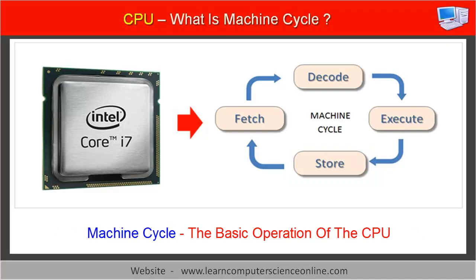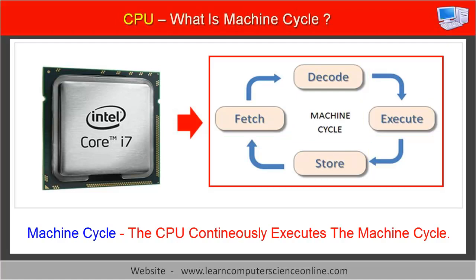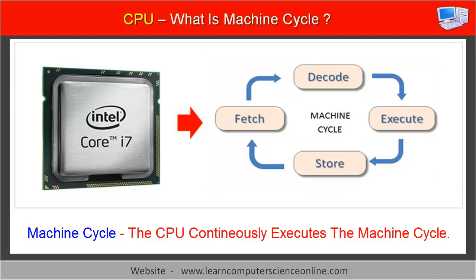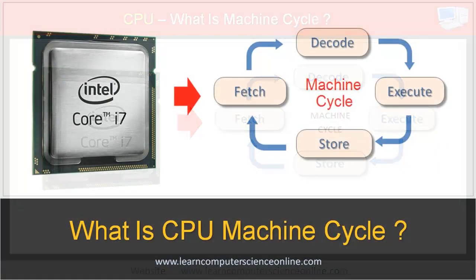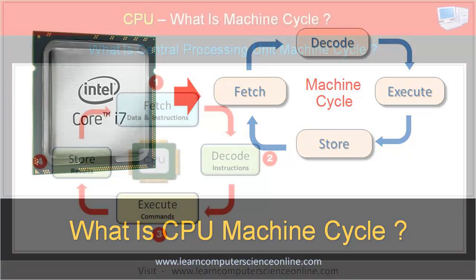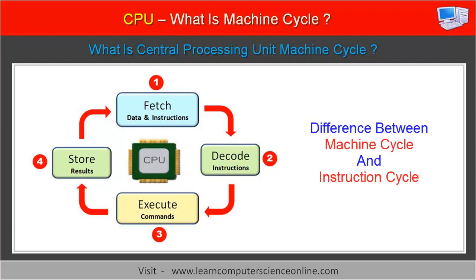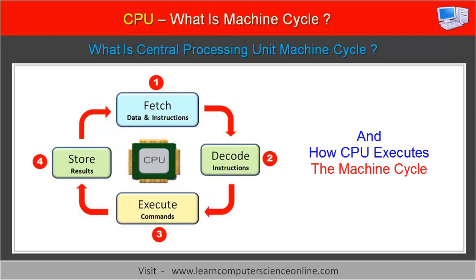Let us now quickly summarize the machine cycle. The machine cycle is the basic operation of the CPU. The CPU continuously executes the machine cycle while performing various operations. The machine cycle consists of a sequence of four steps which include the CPU operations such as fetch, decode, execute, and finally store. Please read the detailed article on our website, learncomputerscienceonline.com, for more details. In this tutorial, we have discussed what is machine cycle, the difference between machine cycle and instruction cycle, and how CPU executes the program instructions.